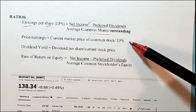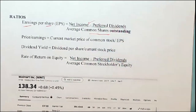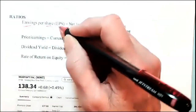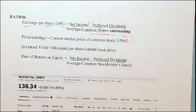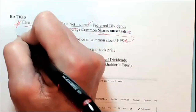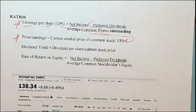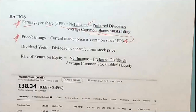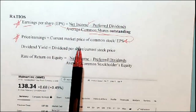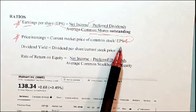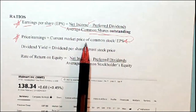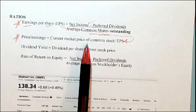Price-earnings ratio is your current market price divided by earnings per share. These are the two key numbers people use when talking about a company. This takes into account the current market price, which is not on your financial statements anywhere. If somebody has $2 of earnings and you're paying $20 for it, you're paying 10 times earnings.